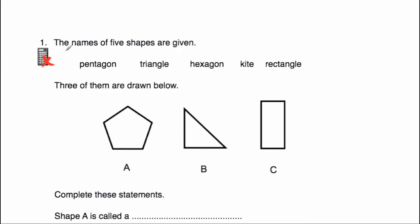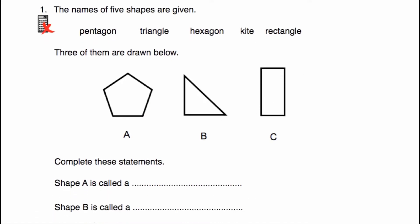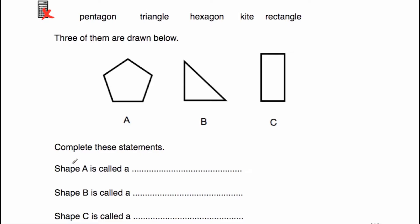Question number one: the names of five shapes are given — pentagon, triangle, hexagon, kite, and rectangle — and three of them are drawn below as shapes A, B, and C. We've been asked to complete the statements. Shape A has one, two, three, four, five straight sides, so that will be a pentagon. Shape A is a pentagon.